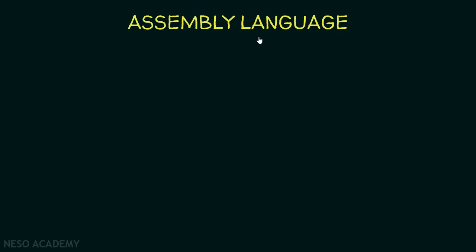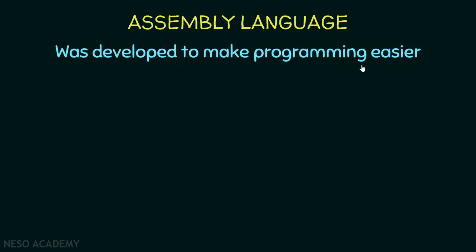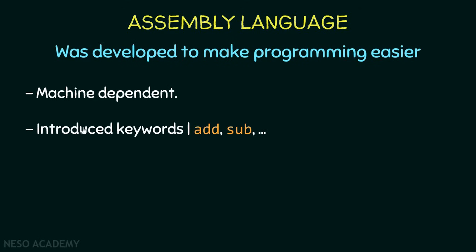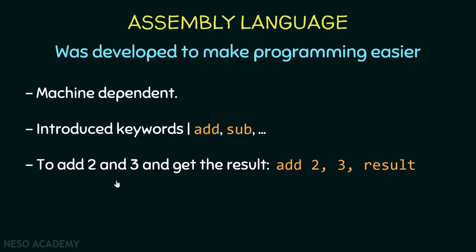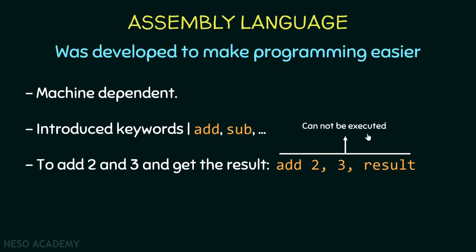Now let's talk about the assembly language. It was developed to make programming easier. It is also machine dependent. In assembly language, keywords were introduced — for example, we have a keyword 'add' and a keyword 'sub' and many more. For example, if we want to add two and three and get the result, we write an assembly instruction telling the computer to add the number two and the number three and store the result in a location called 'result'.